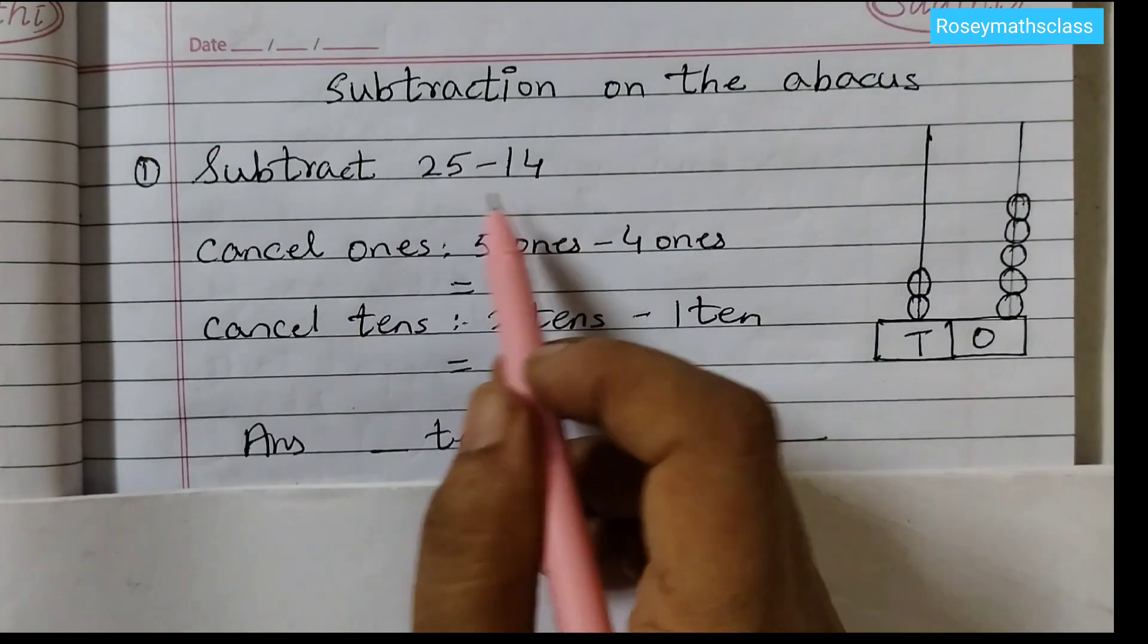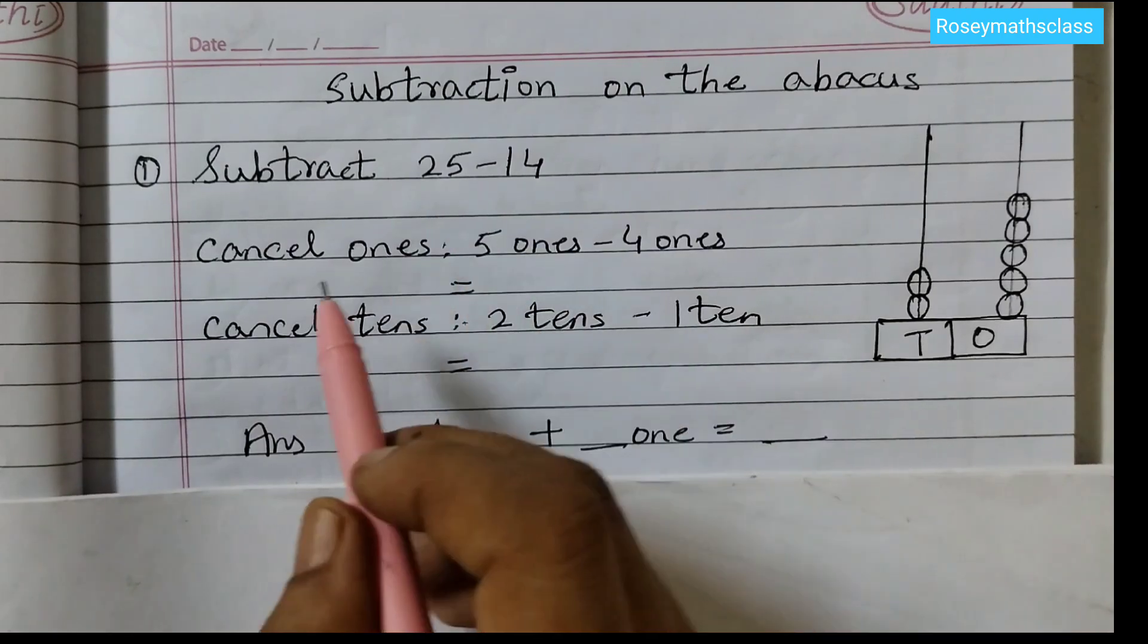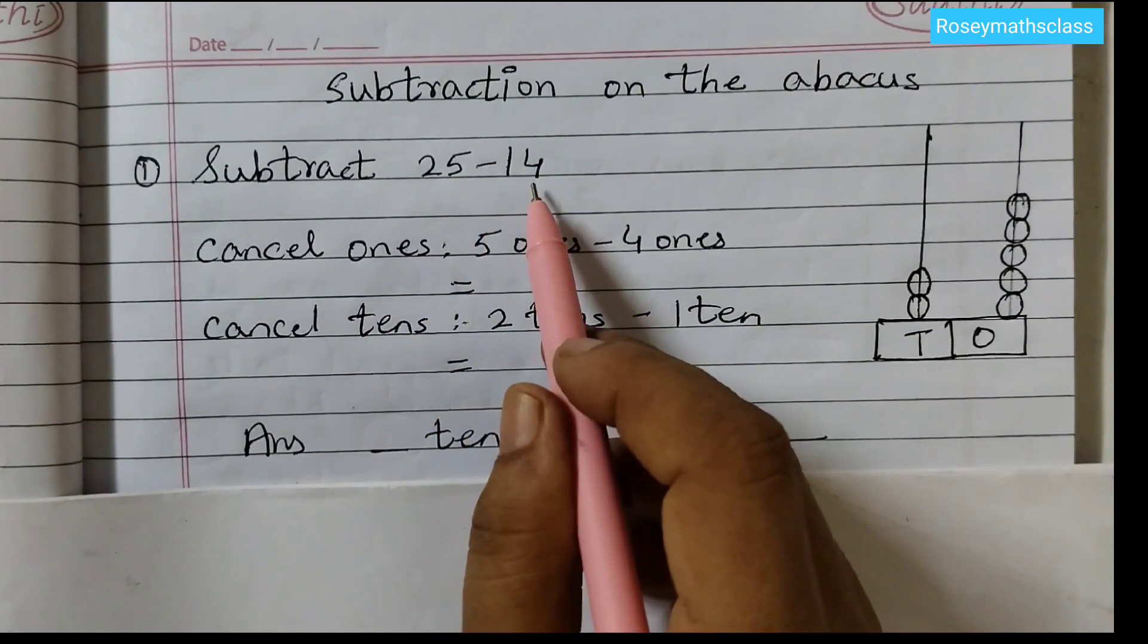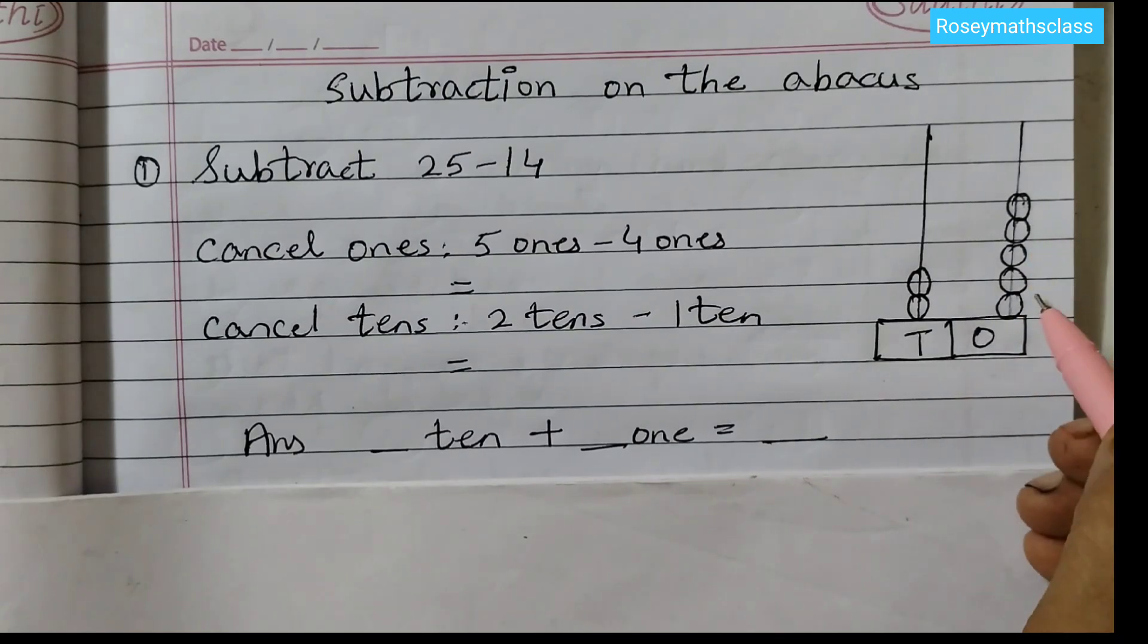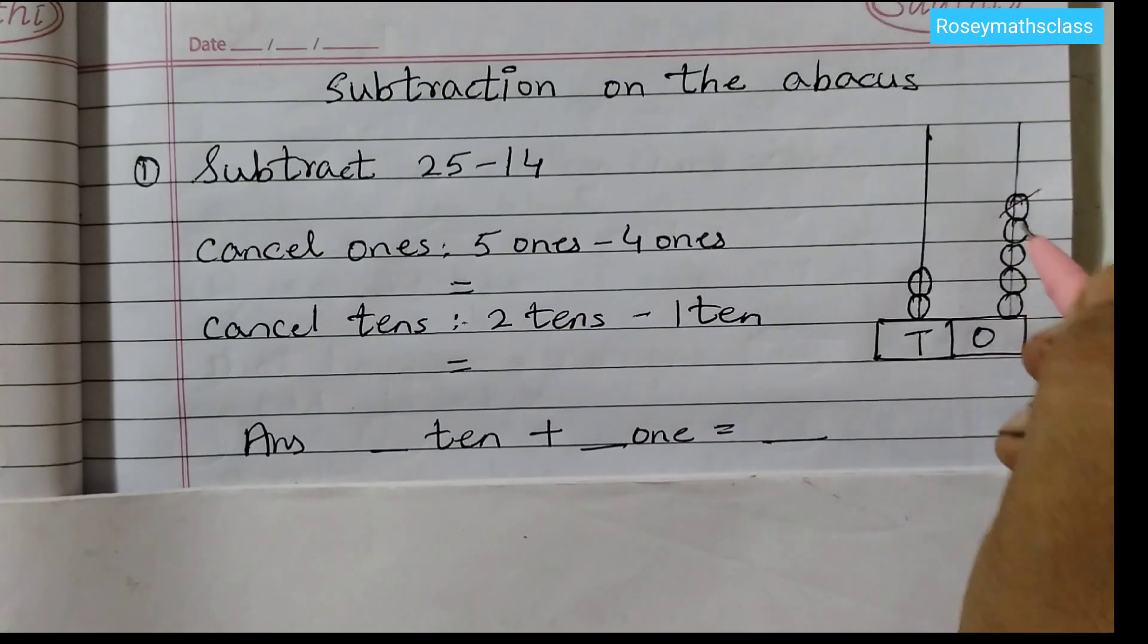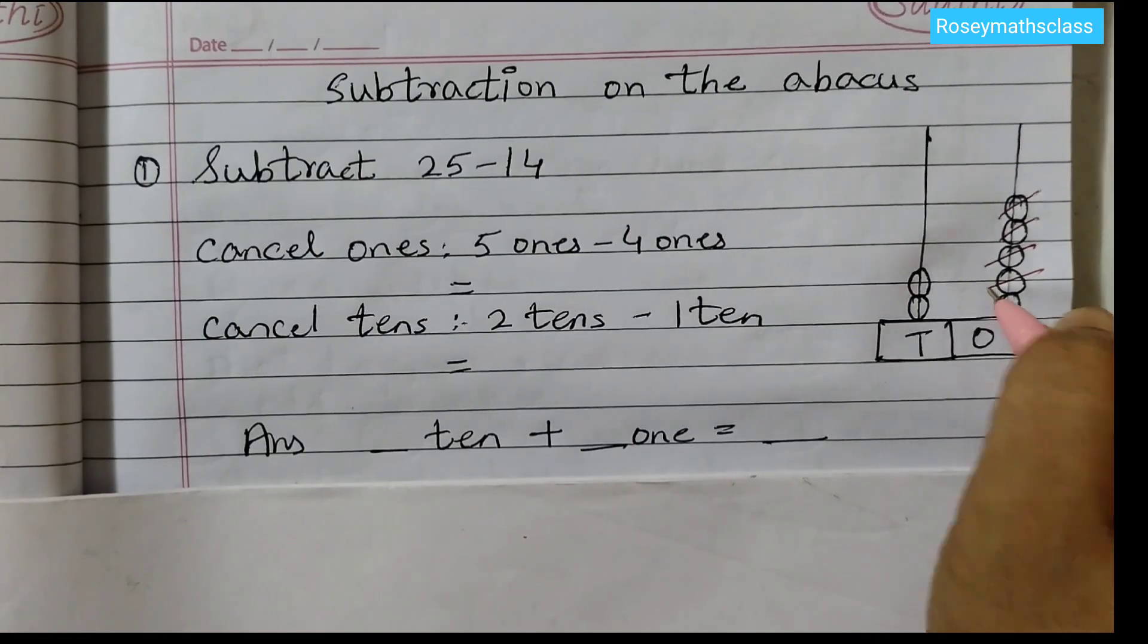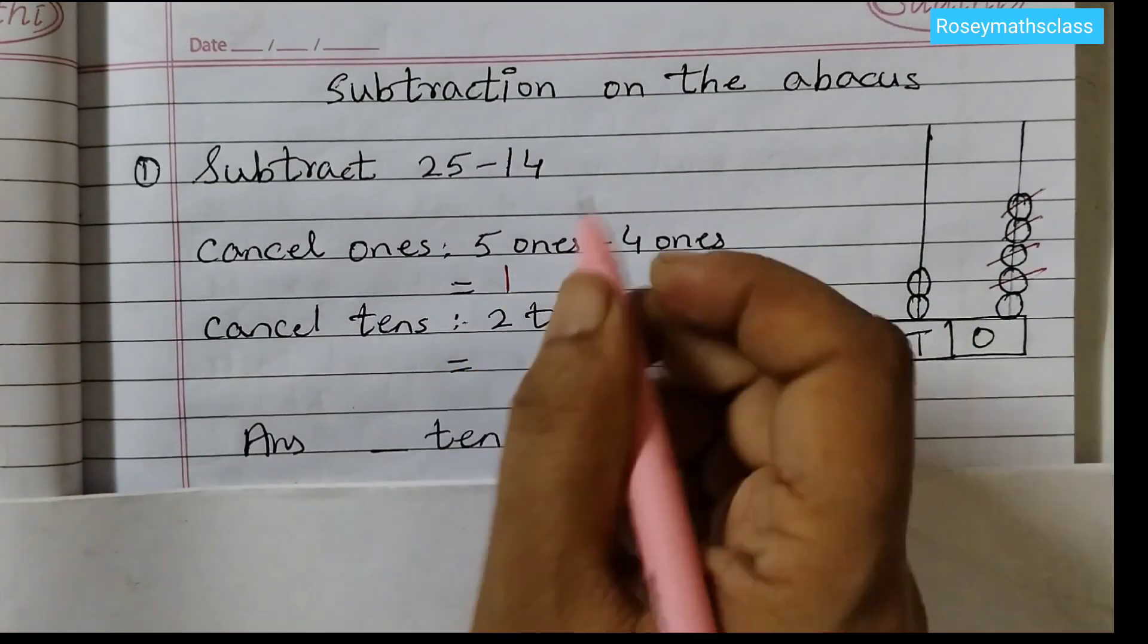Now we need to take away 14 from 25. So first we will cancel the 1's, 5 ones minus 4 ones. This is 1's rod, there are 5 beads, we will cancel out 4 beads. 1, 2, 3, 4. So that is 1.